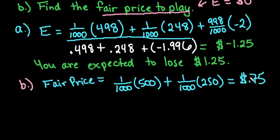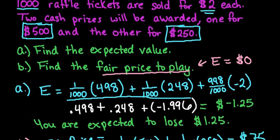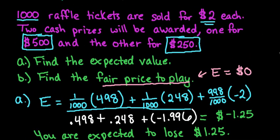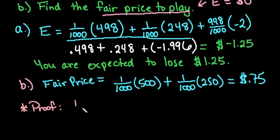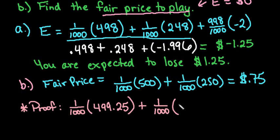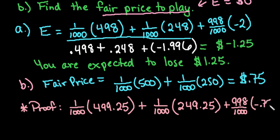If the price to play was 75 cents, that means that our expected value would end up being 0. Just to show you that this works, here's the proof. Basically what we would do is remember that the original prize was $500, so if I paid 75 cents to play, that means that I really have 1 over 1,000 times 499.25. So I really won $499.25 because I paid 75 cents to play. And then if I did the same thing for the 1 out of 1,000 with the 250, this time I would have really won $249.25. And then the last one would be the 998 over 1,000 times the negative 0.75 because those are all the people that lose 75 cents.